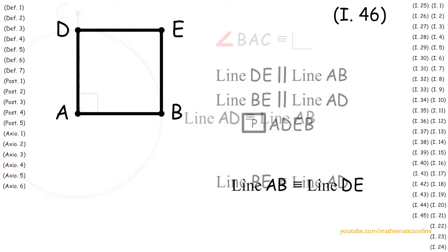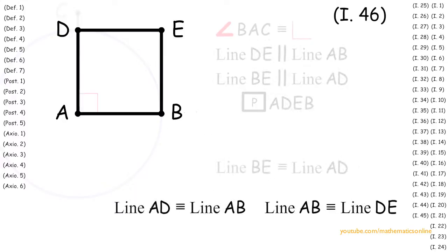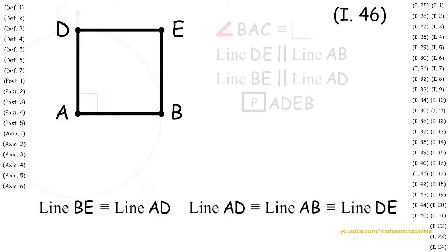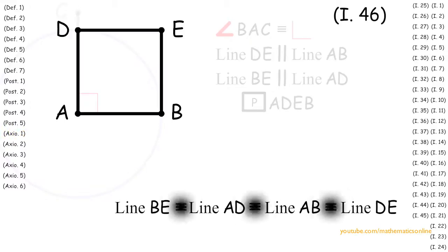So now we have line AD is congruent to line AB and line AB is congruent to line DE. With these two facts we can apply Axiom 1 to show that all three lines are congruent. Since we also have that line BE is congruent to line AD, then by applying Axiom 1 we can show that all four lines are congruent.